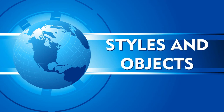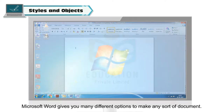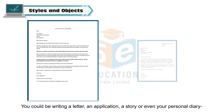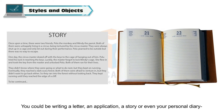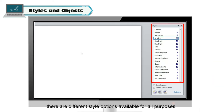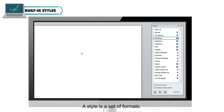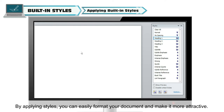Styles and Objects. Microsoft Word gives you many different options to make any sort of document. You could be writing a letter, an application, a story or even your personal diary. There are different style options available for all purposes. A style is a set of formats. By applying styles, you can easily format your document and make it more attractive.